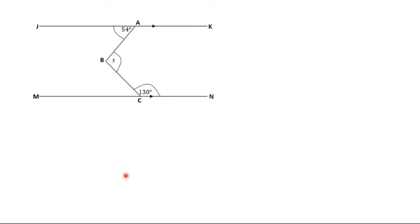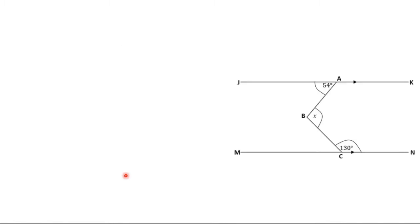Let's look at the next question. We have this diagram and we are supposed to find X. You can see that we have two parallel lines: JK and MN as the two parallel lines.